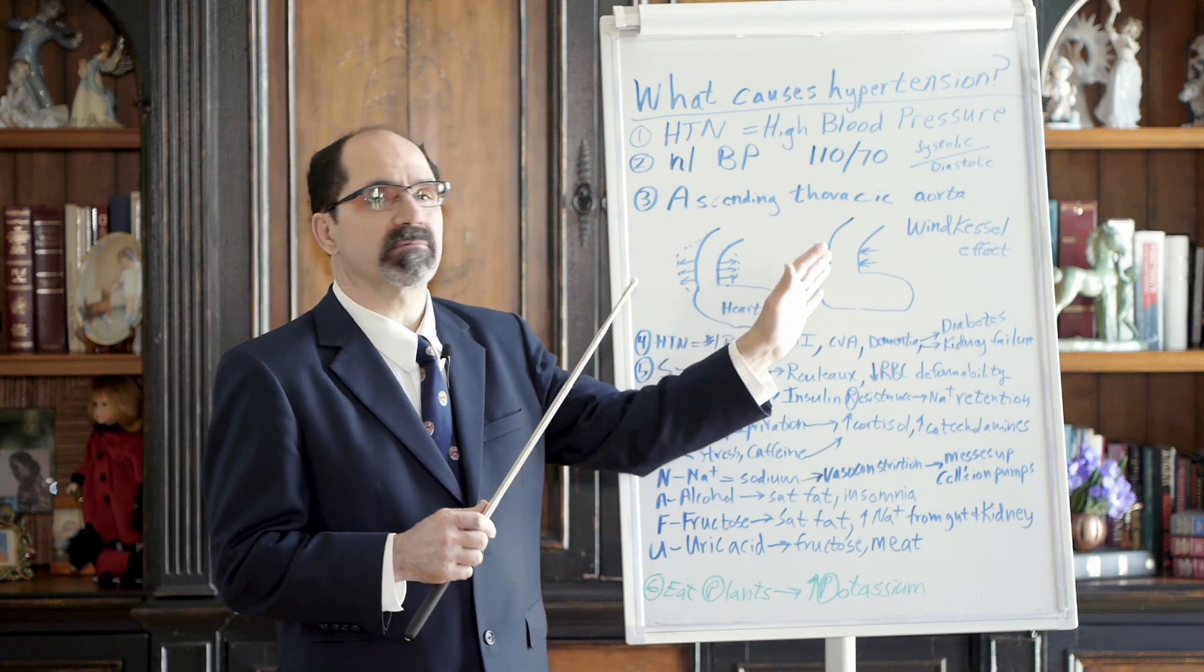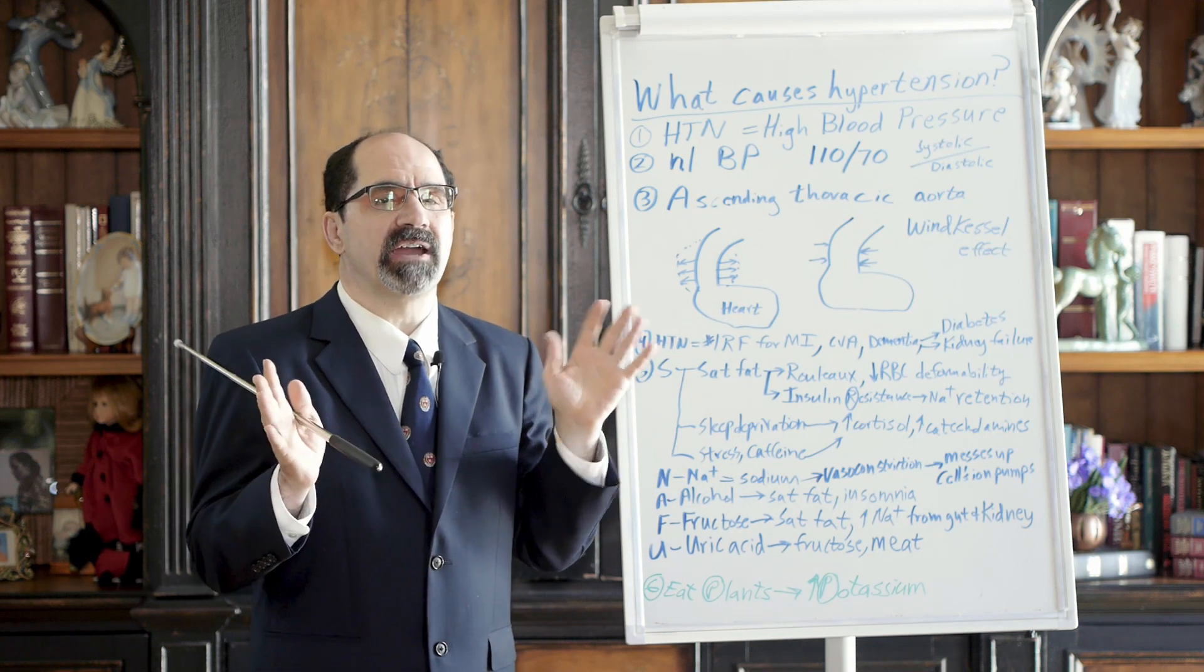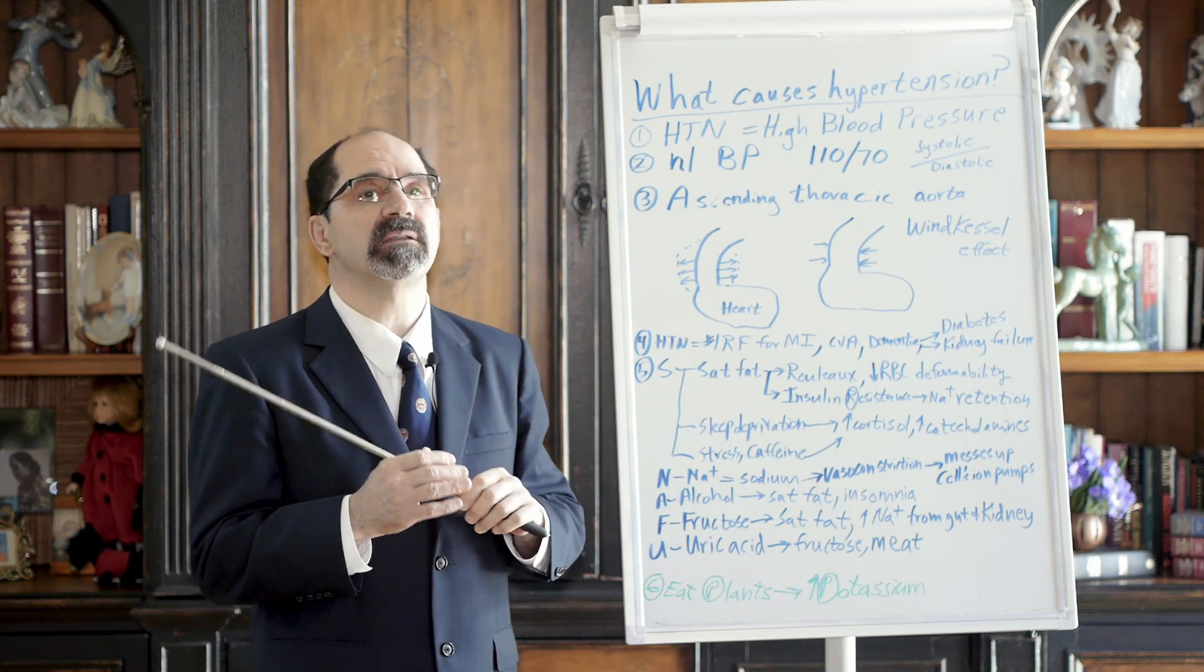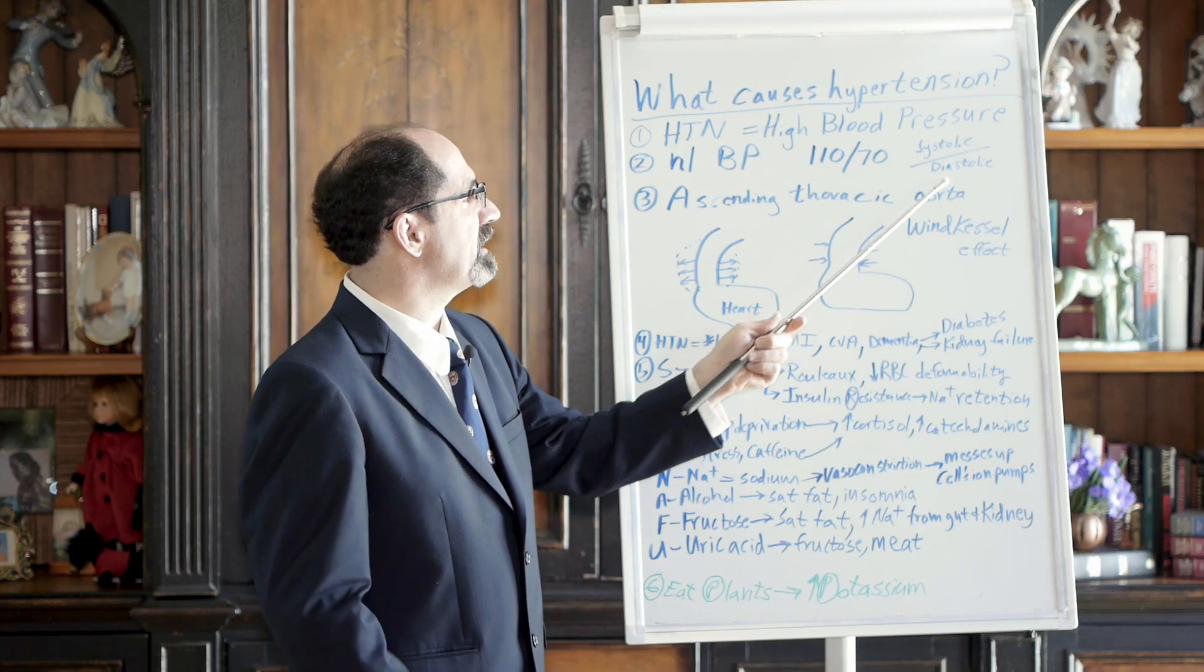And the ascending thoracic aorta will be all calcified. Every day I see calcified thoracic aortas. That's bad because when you lose the elastic recoil, you'll have a harder time maintaining diastolic flow.